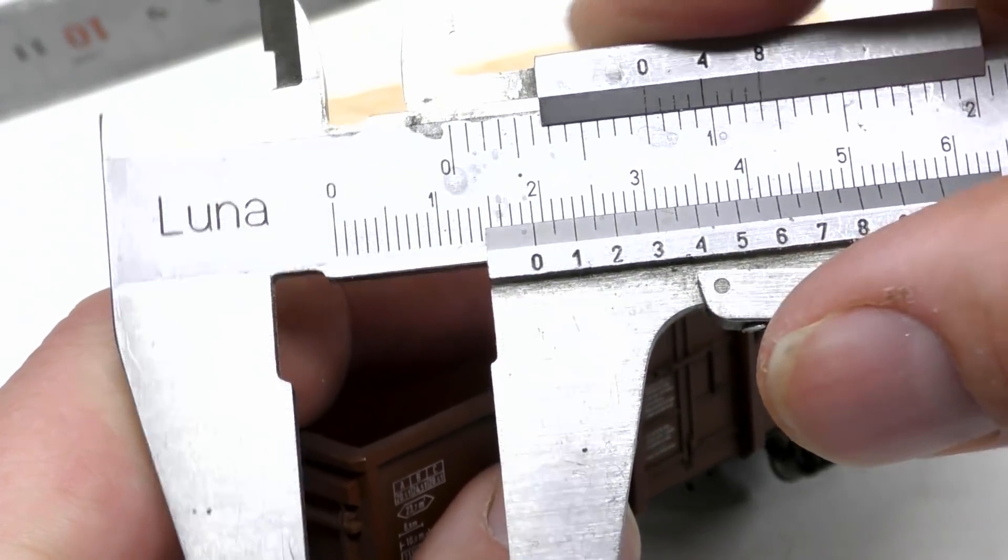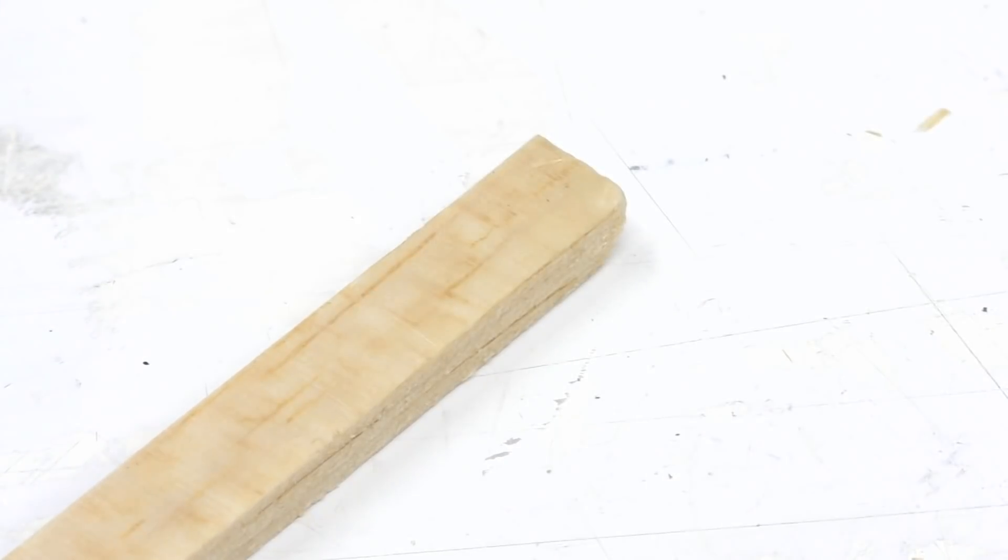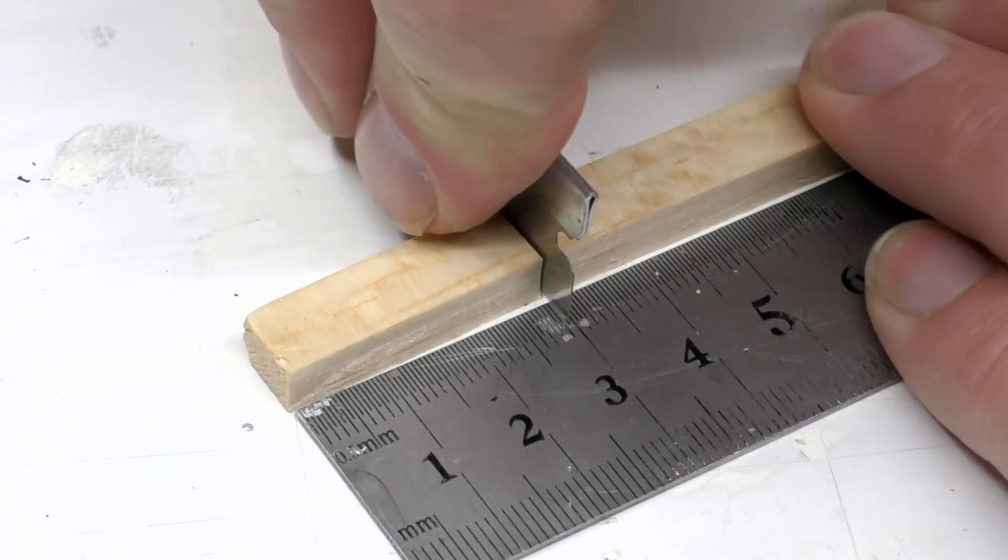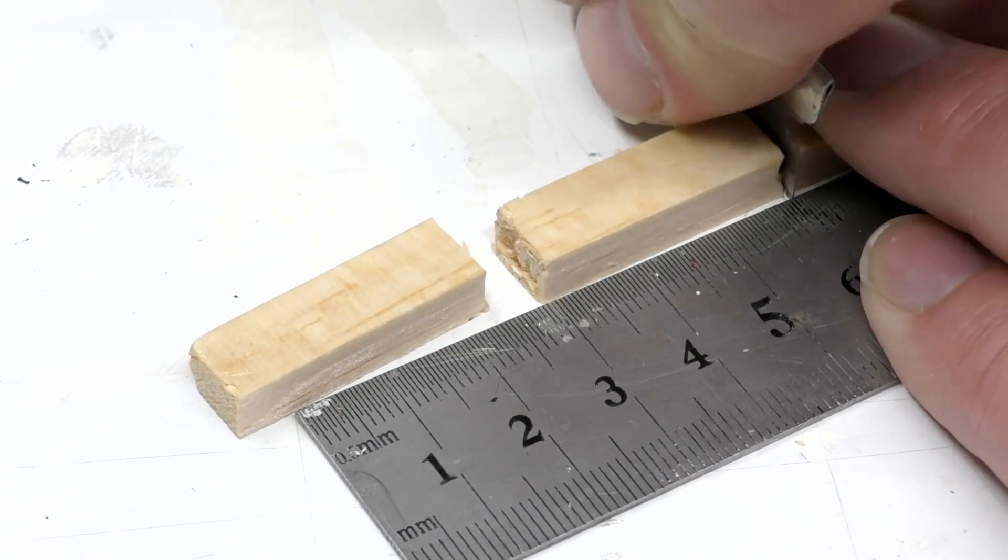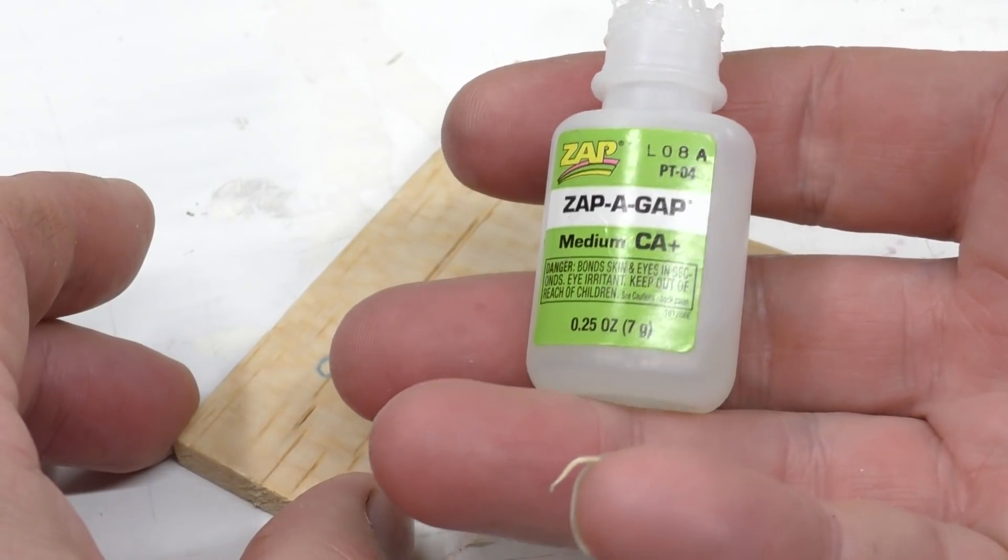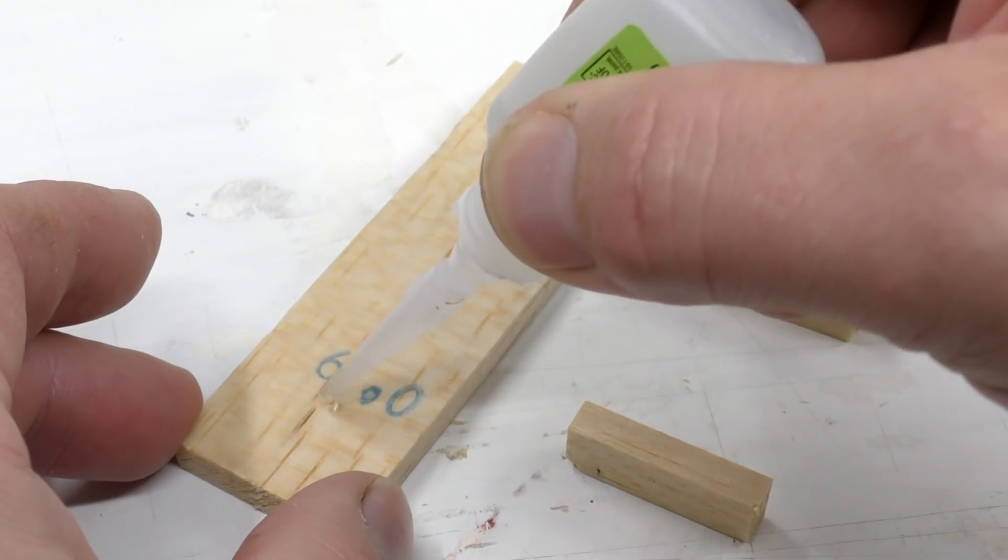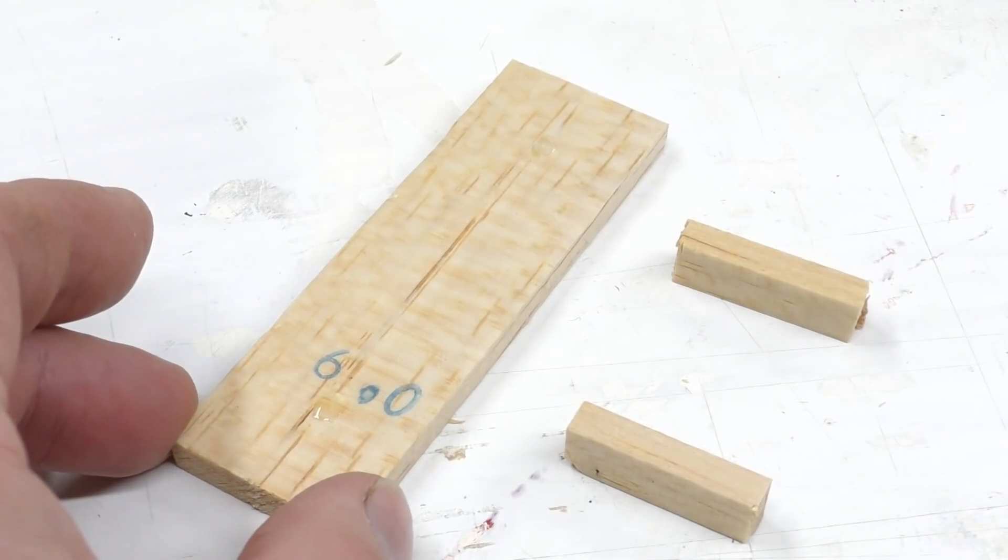The spacers are made from the same balsa sheet and cut to 10 millimeter height. The purpose with the spacer is to push the mounting plate closer to the edge of the car. I glue the spacers in place using fast set glue.